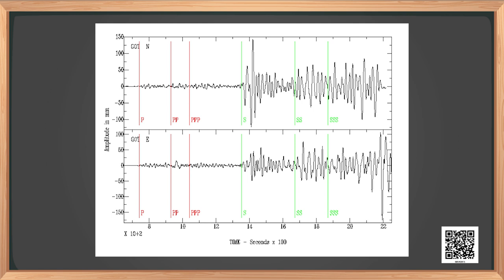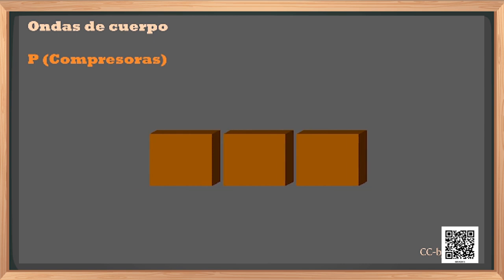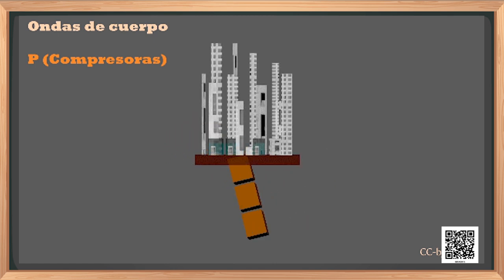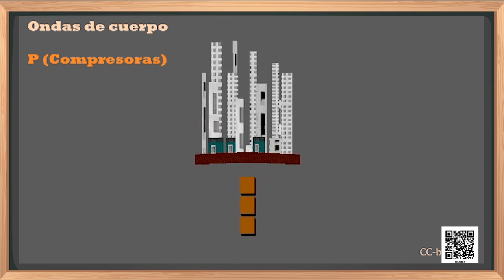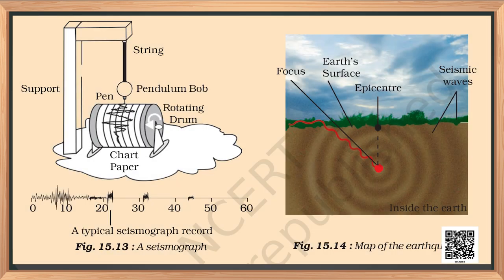The tremors caused during an earthquake produce waves on the surface of the earth called seismic waves. These waves are recorded by an instrument called a seismograph, which is simply a vibrating rod or pendulum that starts vibrating when there are tremors. A pen is attached to the vibrating system, and it records the waves on paper moving under it. By studying these waves, scientists can construct a complete map of the earthquake and estimate its power to cause destruction.